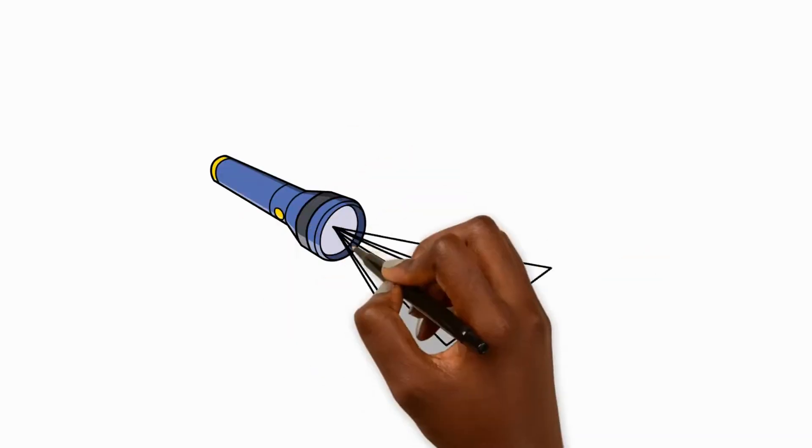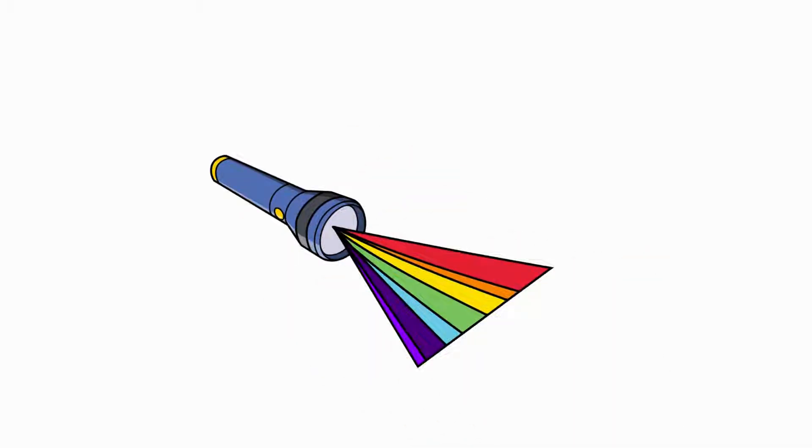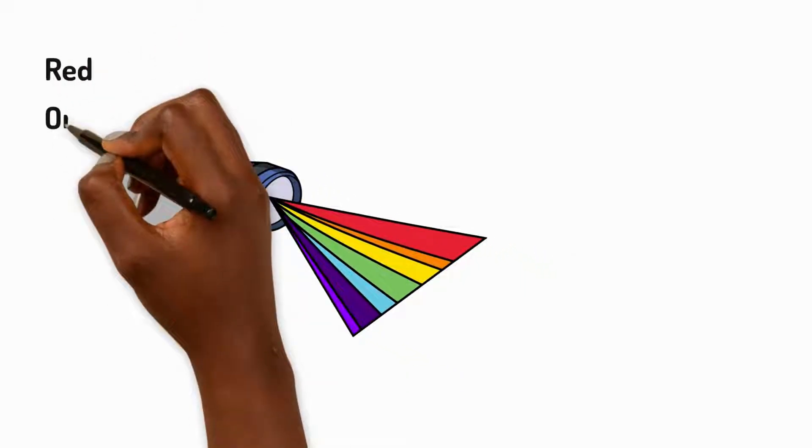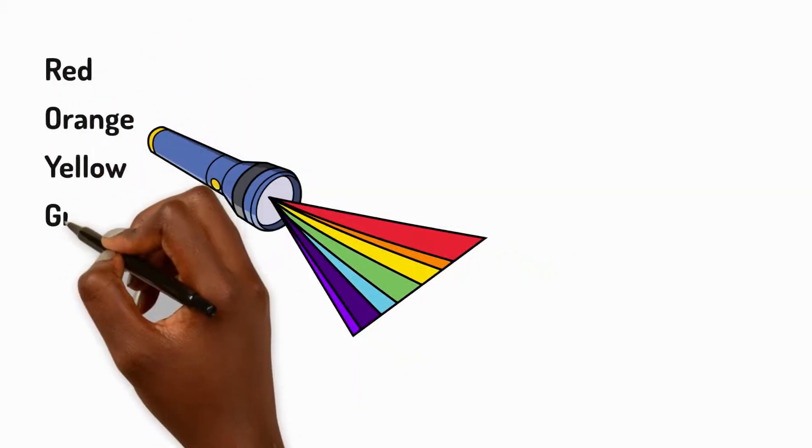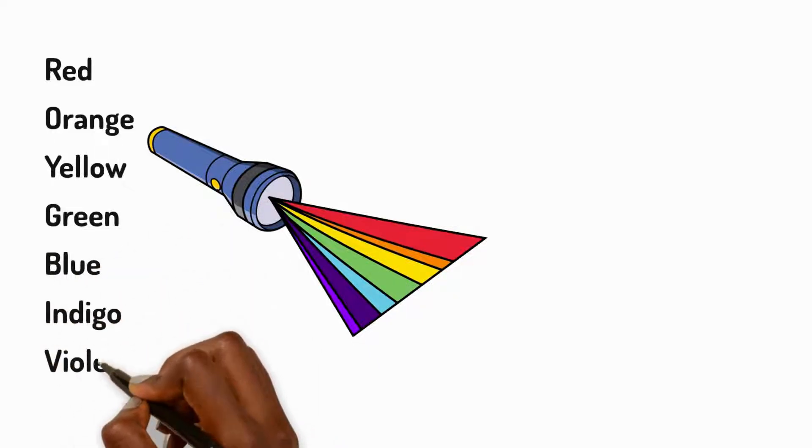Now white light is not just one colour, it's a combination of many colours. The colours of the rainbow: red, orange, yellow, green, blue, indigo and violet.